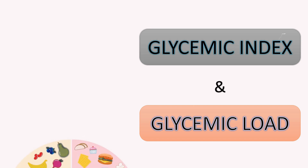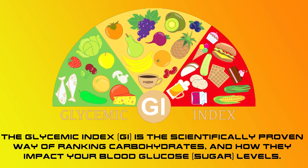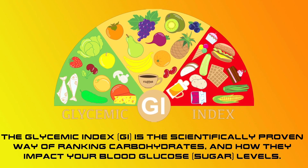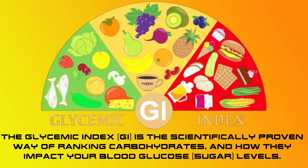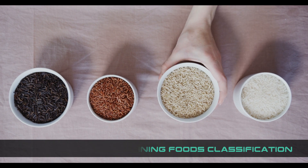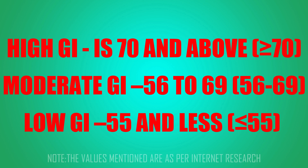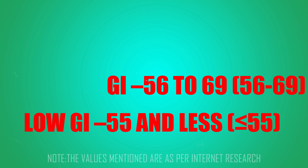Before we go ahead, let's understand two terminologies: glycemic index and glycemic load. The glycemic index is the scientifically proven way of ranking carbohydrates and how they impact your blood glucose sugar levels, considering glucose's benchmark which spikes blood sugar the fastest at 100 percent — that is GI equals 100. Carbohydrate-containing foods can be classified as high GI when the range is 70 and above, moderate GI when the range is 56 to 69, and low GI when the range is 55 and below.